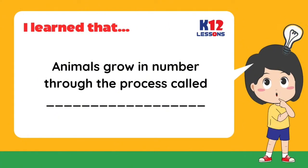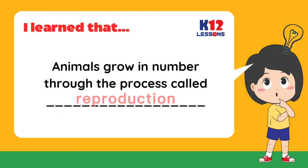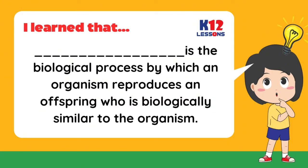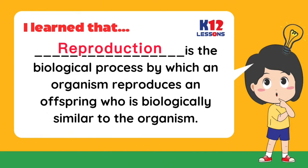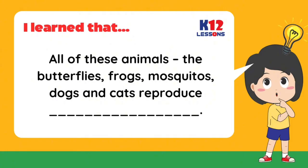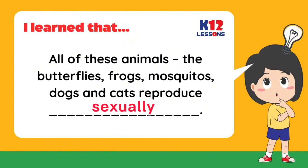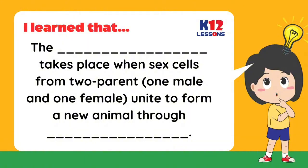I learned that animals grow in number through the process called _____. _____ is the biological process by which an organism reproduces an offspring who is biologically similar to the organism. All of these animals — the butterflies, frogs, mosquitoes, dogs, and cats — reproduce _____. The _____ takes place when sex cells from two parents, one male and one female, unite to form a new animal through _____.